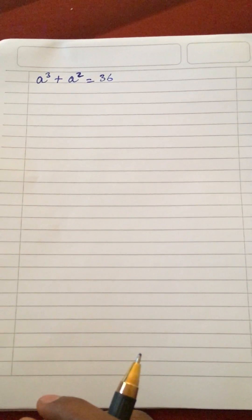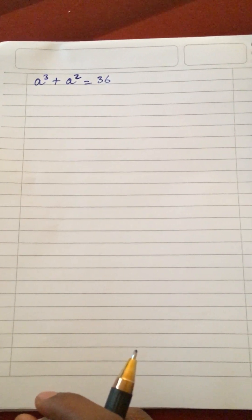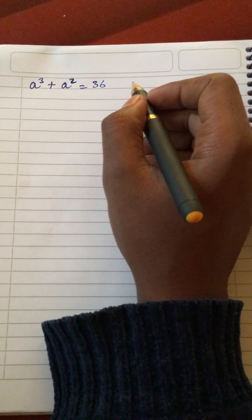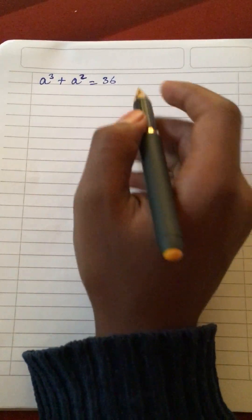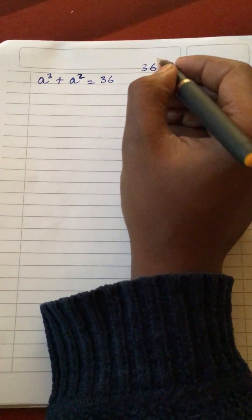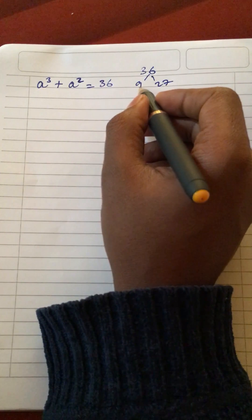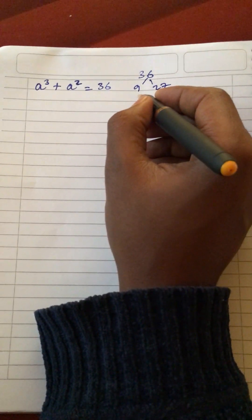A cube plus a square equals 36. How to solve this equation? First, we find the prime factors of 36. So 36 equals 9 plus 27, which is 3 squared plus 3 cubed, relating to a³ + a². So the equation becomes a³ + a² - 36 = 0.